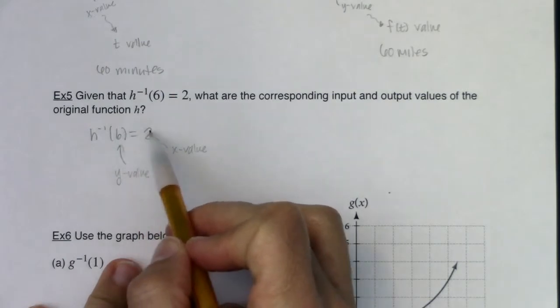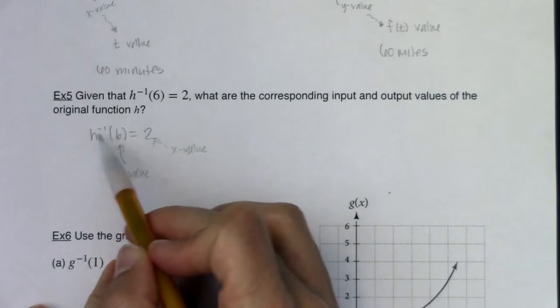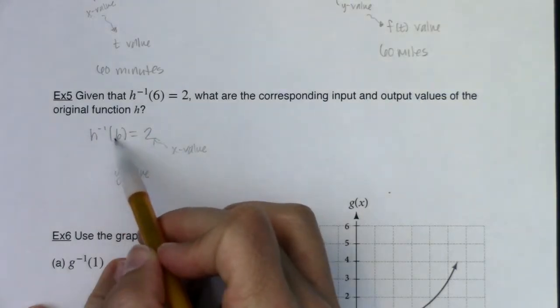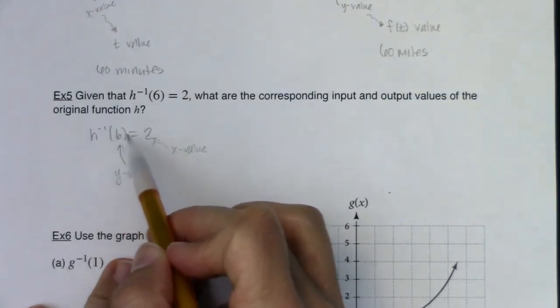So that means when my x value is 2, my y value is 6. Or working backwards, I can say, well, if I had a y value of 6, what was the corresponding x value? 2.